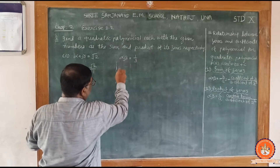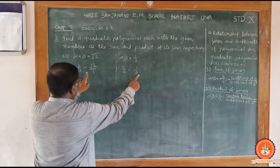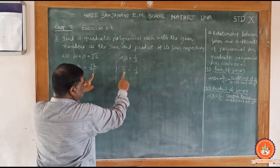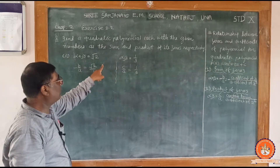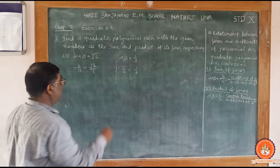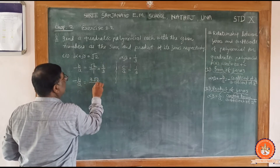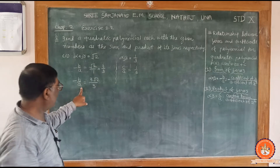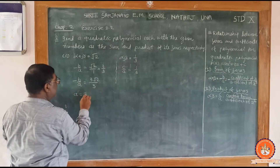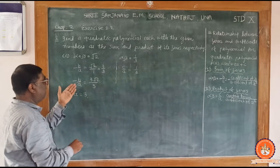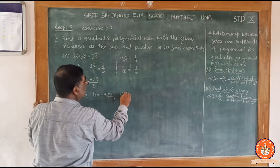Alpha into beta equals 1 by 3, so c upon a equals 1 by 3. The digit against a is 1 here and 3 there. So we multiply root 2 upon 1 by 3 upon 3, giving minus b upon a equal to 3 root 2 upon 3. Now a equals 3, minus b equals 3 root 2 so b equals minus 3 root 2, and c equals 1.